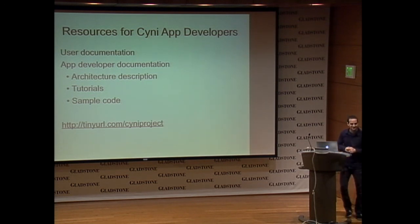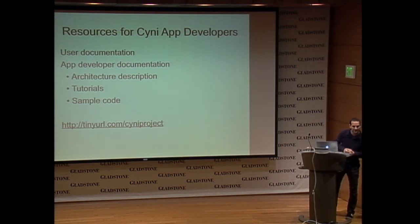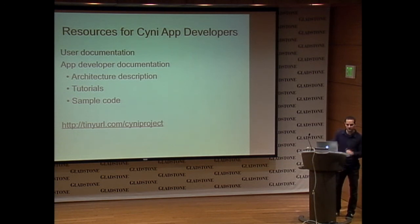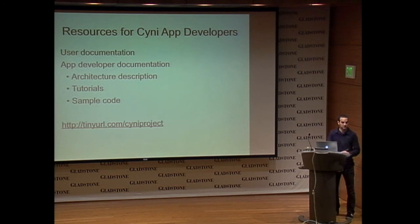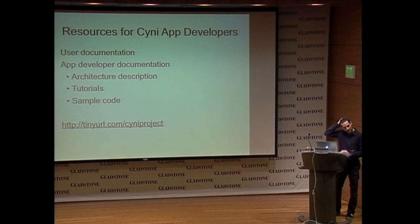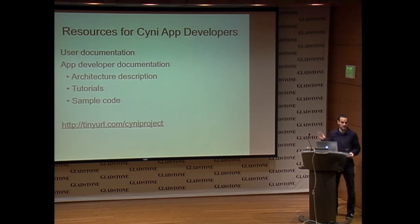Question: How does the SIGNE architecture fit in the Cytoscape 3 OSGI framework? Answer: Our app actually contains two bundles. One of the bundles is the API, and the other is just the implementation. The API is essentially the framework. Future app developers that want to use SIGNE need to use that API bundle.